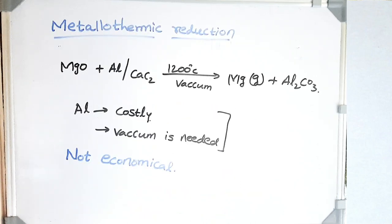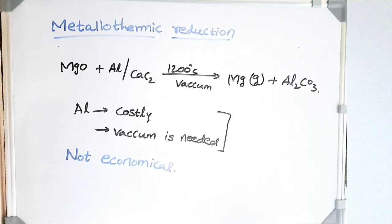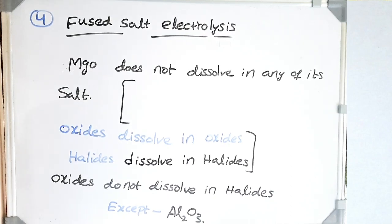For metallothermic reduction, we can reduce MgO using aluminium or calcium carbide at 1200°C under vacuum to produce gaseous magnesium. However, this process is not economical because we need to apply vacuum and aluminium itself is costly. So we cannot use aluminium to produce magnesium at industrial scale.